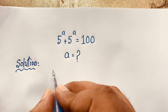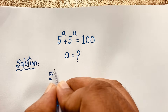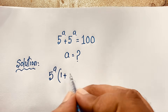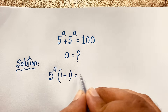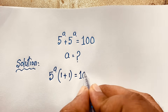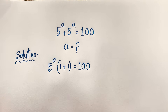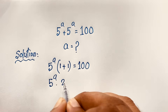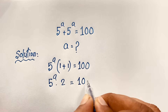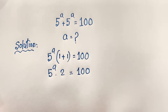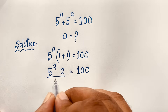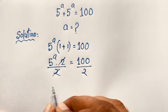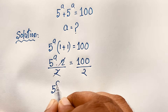In our question, 5 to the power a is common, so we factor it out. Dividing, it will be 1 plus 1 is equal to 100. You can see here 5 to the power a times 1 plus 1, which will be 2, is equal to 100. Then I divide both sides by 2 — these two cancel out.